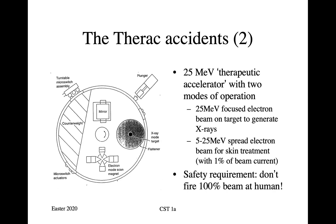This is what the device looks like at the business end. There's a turntable which puts either the x-ray mode target in line of the electron beam, or else an electron mode scan magnet which focuses the electron beam on the appropriate part of the patient's skin. The x-rays are used for treating deep tumors, and the electrons for treating surface lesions. There's also a mirror so that the radiotherapist can line this up with the tumor, and there's a turntable microswitch assembly which determines where the turntable is, and there are various safety interlocks.